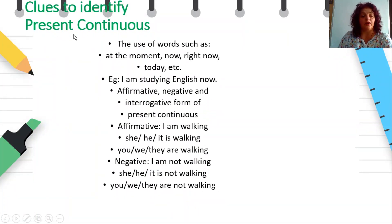Clues to identify present continuous. The use of words such as at the moment, now, right now, today. Example: I'm studying English now.